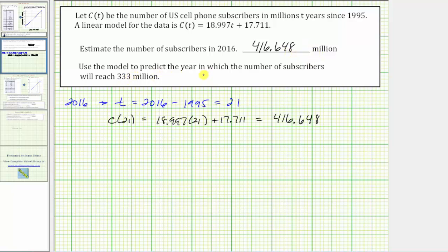Next, we're asked to use the model to predict the year in which the number of subscribers will reach 333 million. To answer this question, we need to determine the value of t that would give the function value c(t) = 333.